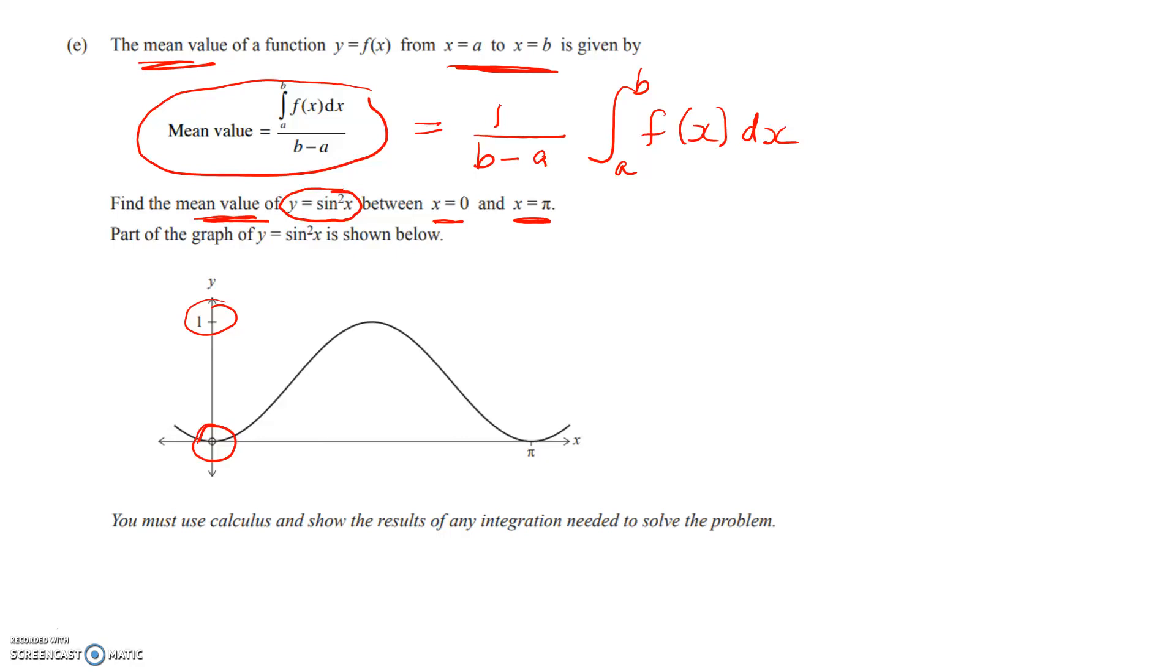And they've shown you part of the graph. So the next step is to apply this mean value formula. And we've got our two limits, so the limits are going to be 0 and pi. So the mean value will be 1 over pi minus 0, from pi to 0, times sin squared x dx. So that's the first step.